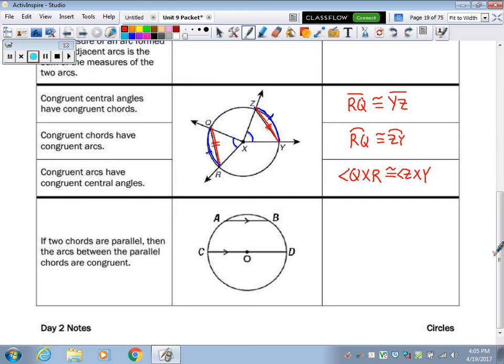Then this symbol here, remember these arrows on the lines, means these two lines are parallel. So if you have parallel chords, that also makes two arcs that are the same. This one's tracking parallel to this one, so they're cutting the same arc. So arc AC is the same as arc BD.